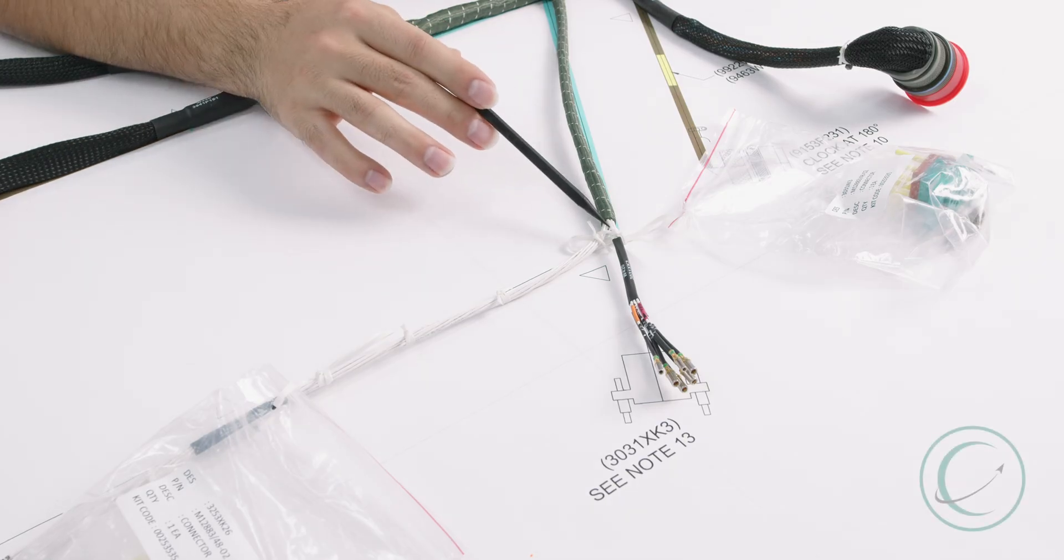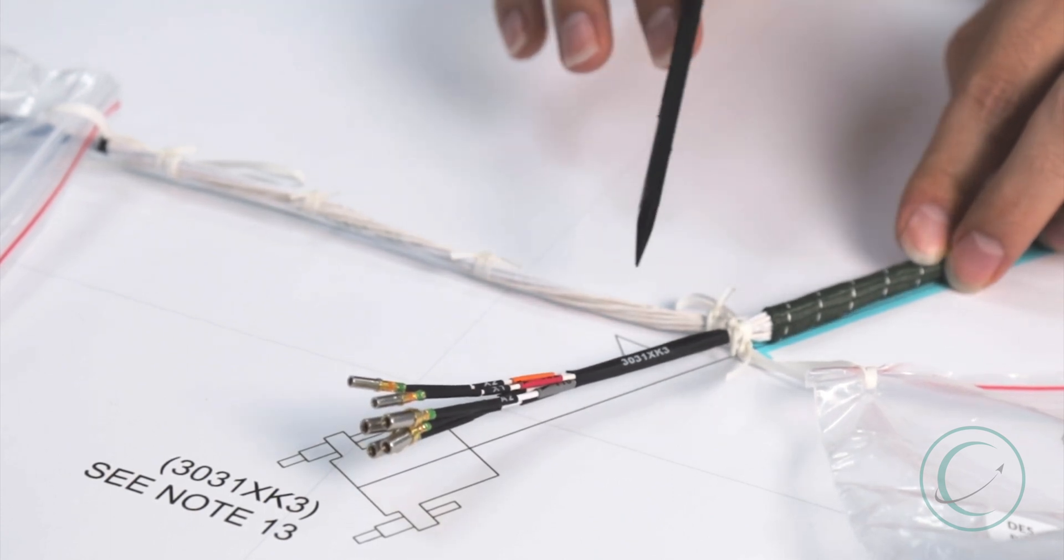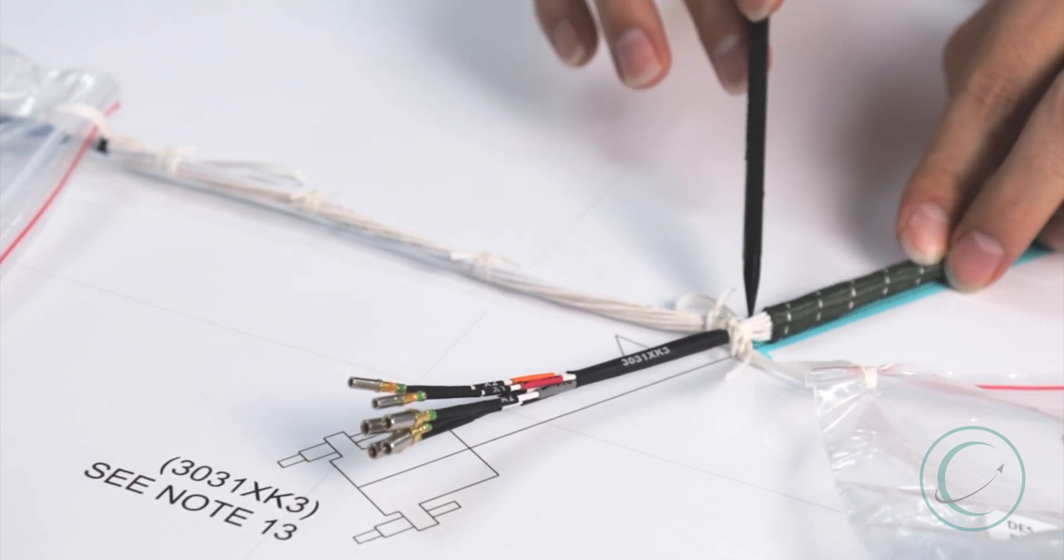So when referring to string tying breakouts, it looks something like this, where you have a breakout from two branches, and string tie is used to form this.